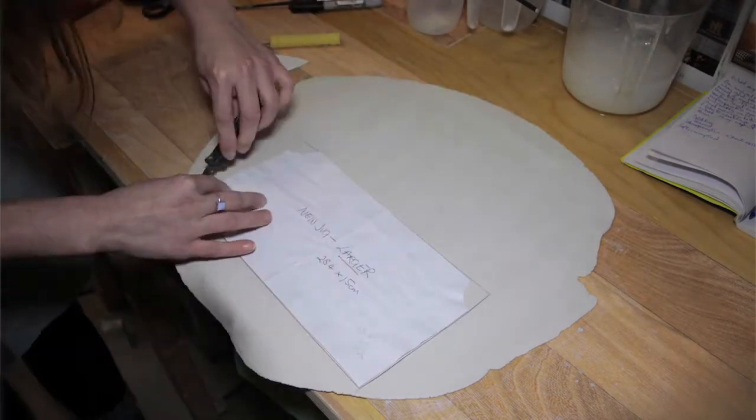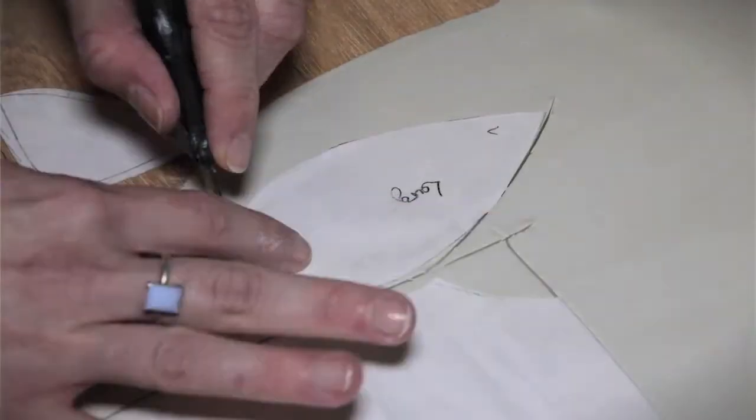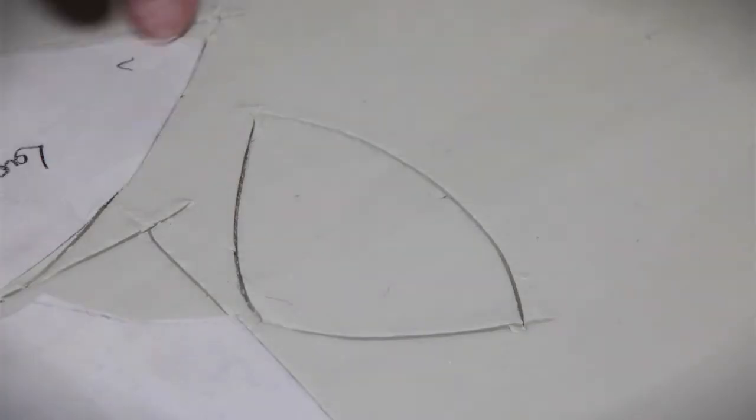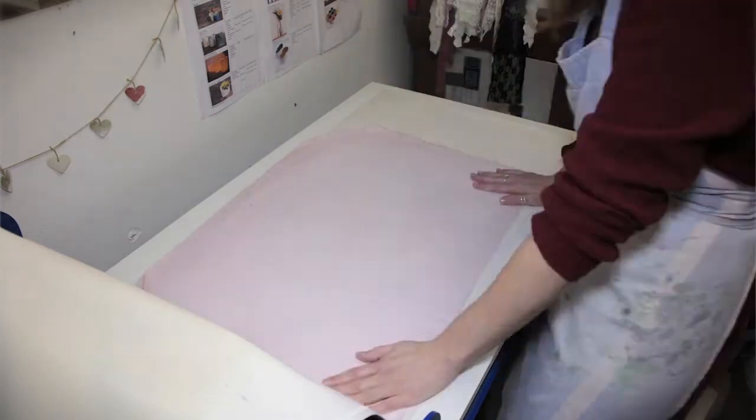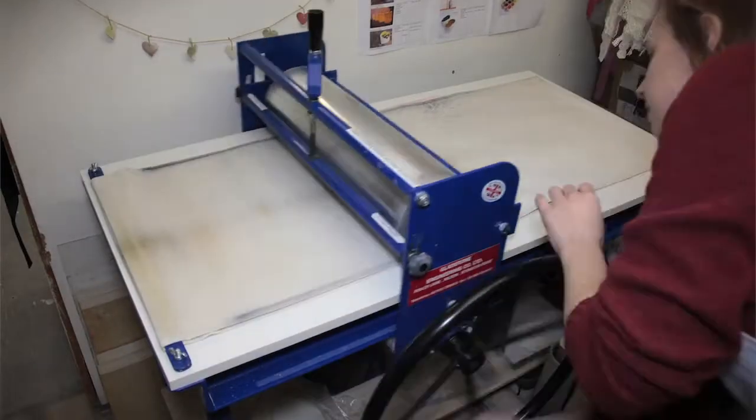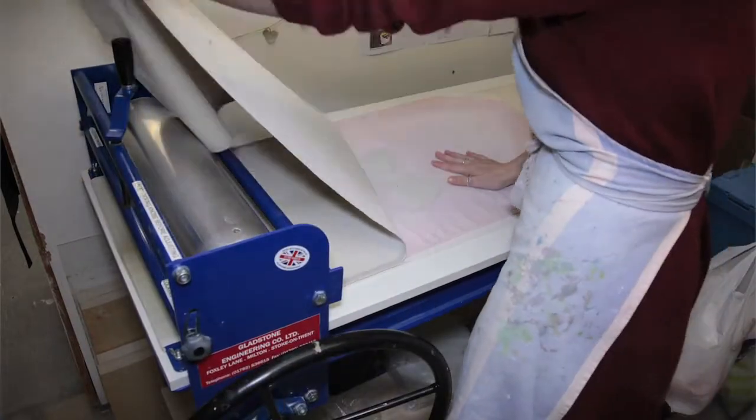I worked out very soon that the porcelain wants to warp and move in the kiln, and that was frustrating when I had a perfect shape and it came out all slumped. I realized there was something I could exploit and explore, and that's how I came about my manipulated forms.